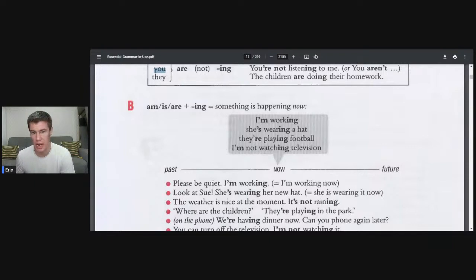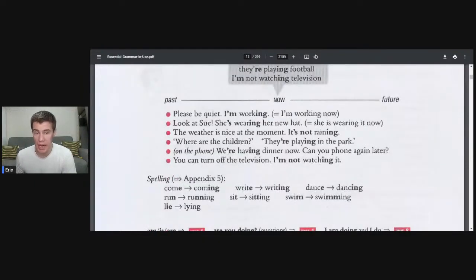Something is happening now. I'm working. She's wearing a hat. They're playing football. I'm not watching television. We can see it's in the past, it's right now, it's in the future. Please be quiet, I'm working. You can say now I'm working, or you can put the time word at the start or at the end. Look at Sue, she's wearing her new hat. She is wearing it right now.